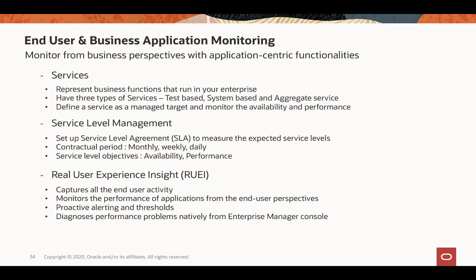Now shifting focus a bit toward business application monitoring. Enterprise Manager has integrated application-centric functionalities: services, service level management, and real user experience insight. A service is one of the target types in Enterprise Manager — it can be any business function useful to you, defined as a service and monitored with Enterprise Manager. A service could be a system-based service (a group of related targets) or a test-based service based on REST API, SOAP-based web services, or a SQL query. Once defined, you can also set up SLA to measure expected service levels.